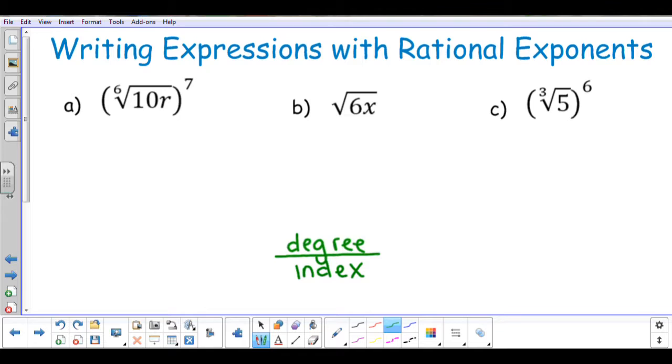So in (a), my base is going to be what's underneath the radical, so 10r. The degree on the whole radical is 7 and the index is 6. So I'm going to have 10r to the exponent of 7/6.